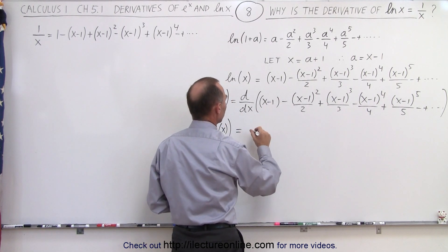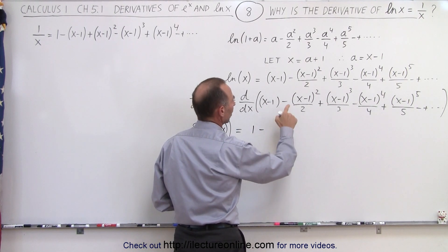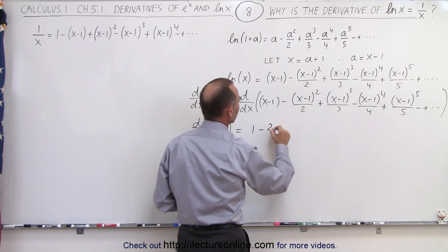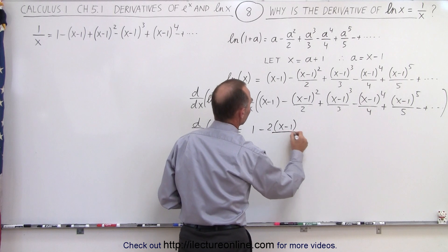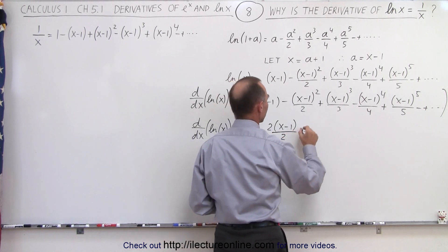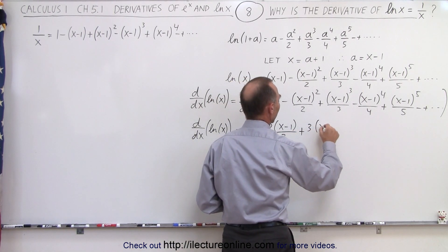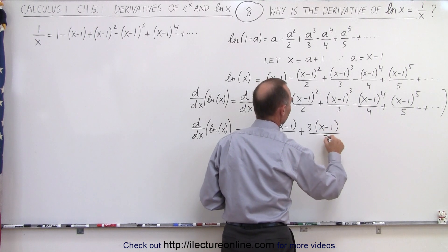The derivative of this would simply be 1, minus the derivative of this would be 2 times x minus 1, times 1, divided by 2, and here we get plus 3 times x minus 1 divided by 3.